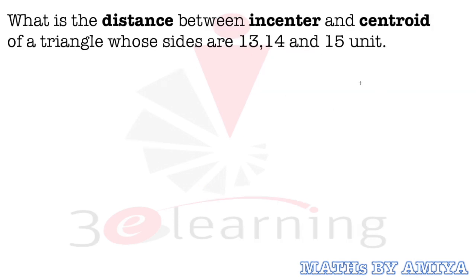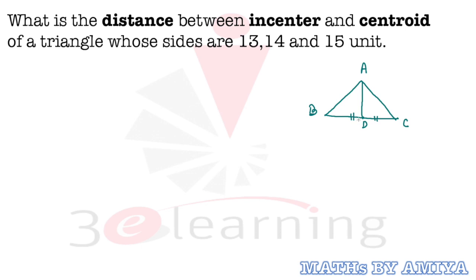Whenever we have a triangle, I am going to give you the concept first. If you have any triangle ABC, then if AD is the median, it divides the triangle's area into equal halves. And if G is the centroid, then the ratio of AG to GD is 2:1.